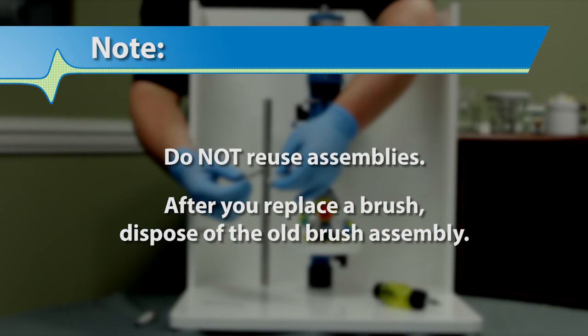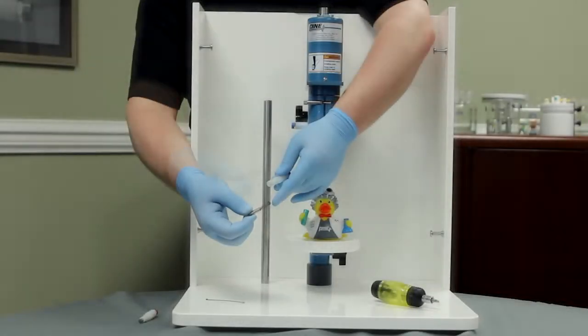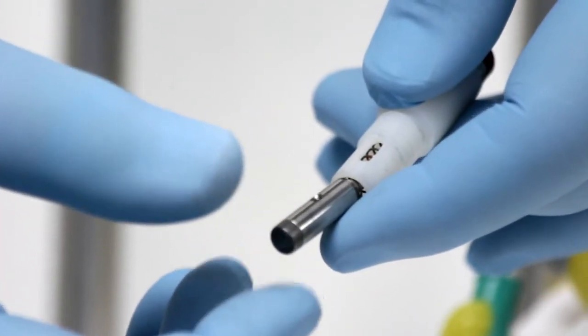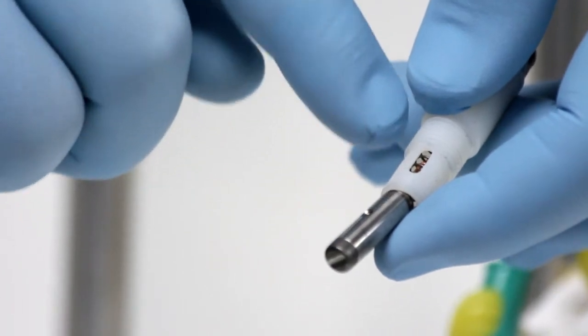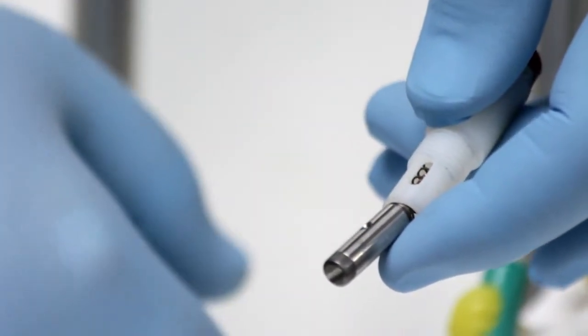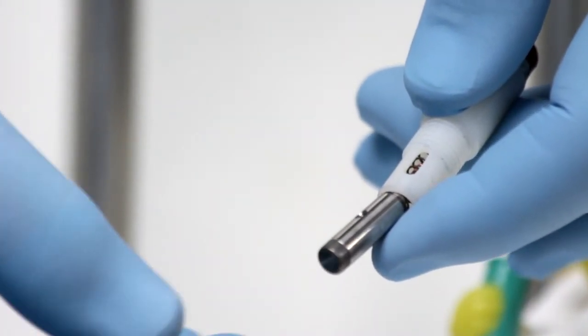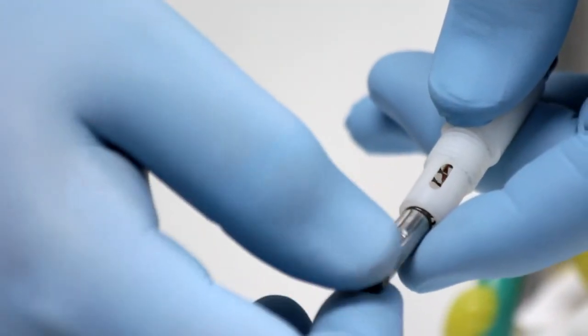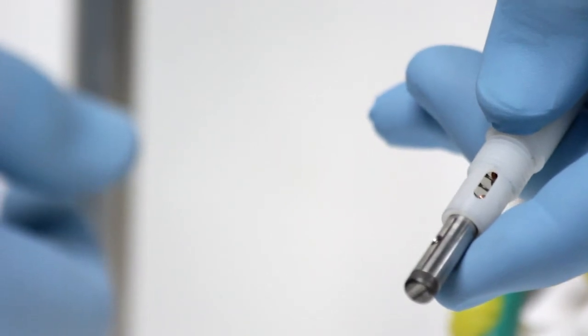Simply drop the spring-loaded end into the plastic holder and align the set screw hole with the channel that you see here in the plastic. Also note, there are two holes in the brush assembly and they look very similar.